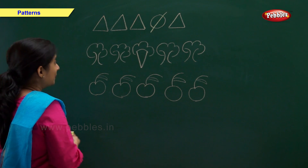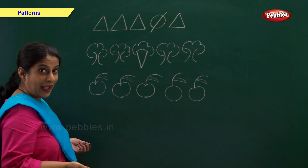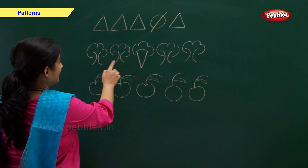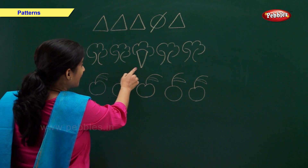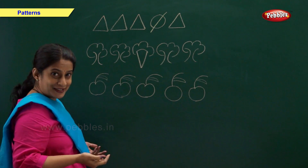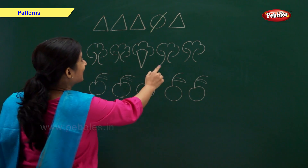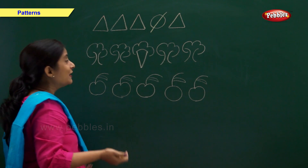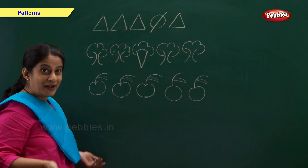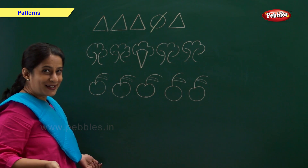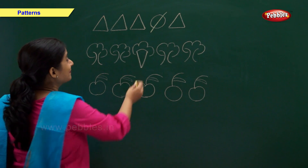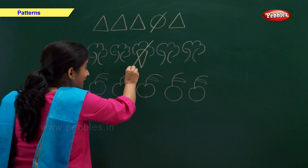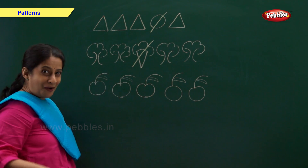In this group we have tree, tree, ice cream, tree and tree. So which figure is the odd one out? Ice cream is the odd one.